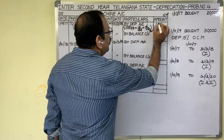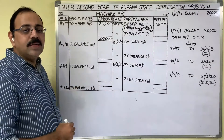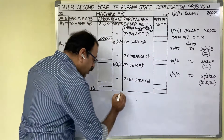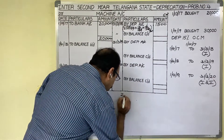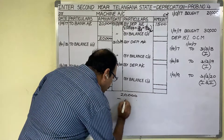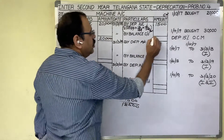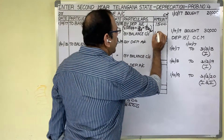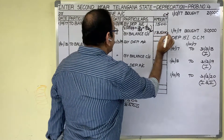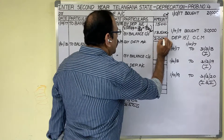The depreciation comes to 1,500 rupees. Then we find out the balance carried down — debit total minus credit total. The balance carried down is 18,500 rupees. Write down the totals on both sides.